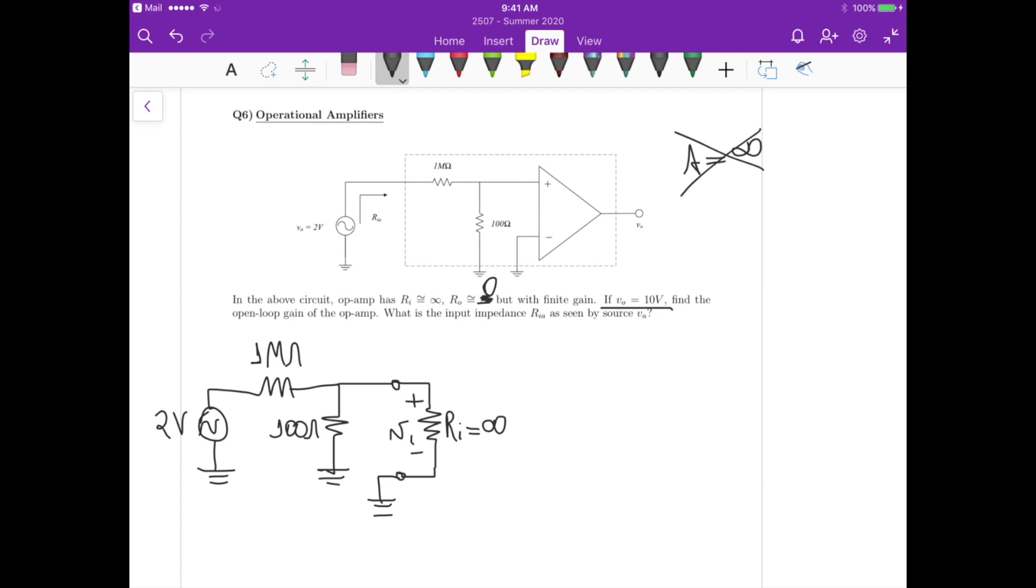Now on the op-amp, there's another circuitry here that basically tells us that this voltage here is a voltage-dependent voltage source. So it has a gain A that now is finite, times that V_i, and then here we have an output resistance.